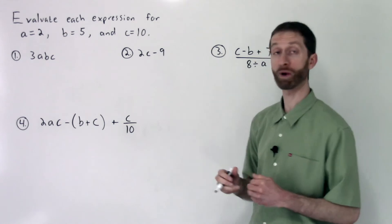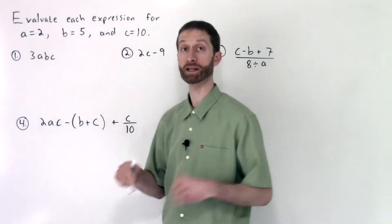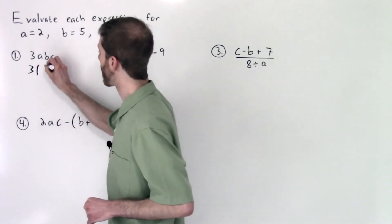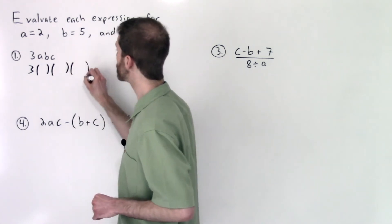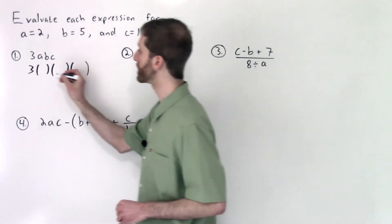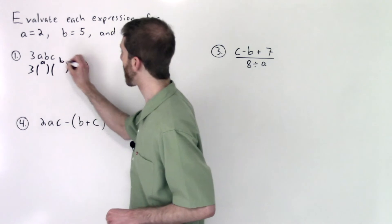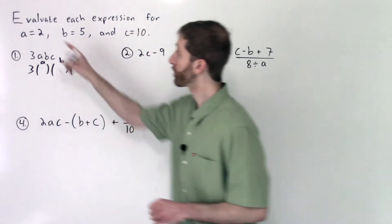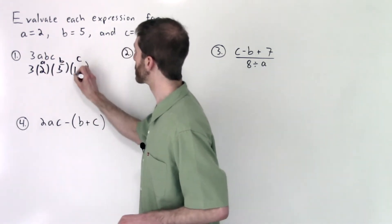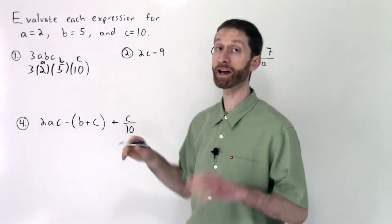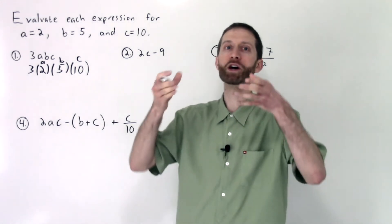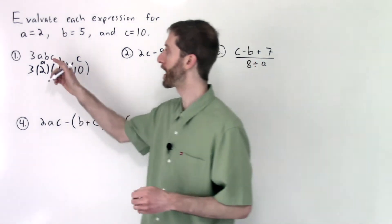Let's roll into the first problem. Number one says 3 times A times B times C. I've got three empty places into which I'm going to evaluate or plug in the numbers A, B, and C. For A we replace a 2, for B we replace a 5, and for C we replace a 10. I'm understanding that I'm not just replacing the variable, I'm putting a number in for the holding spot that we call A, B, and C.